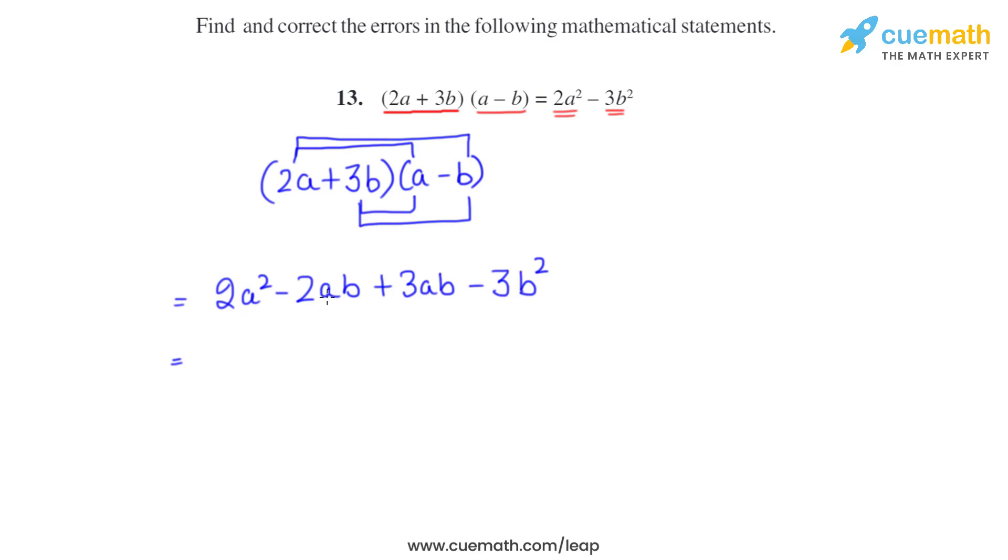Now we can see there are two like terms: minus 2ab plus 3ab. Minus 2 plus 3 means plus 1, so 2a² plus 1ab or plus ab minus 3b² stays as it is. So the correct answer should be 2a² + ab - 3b².